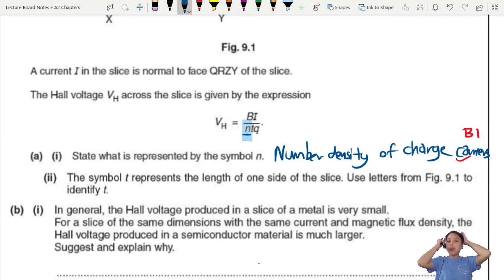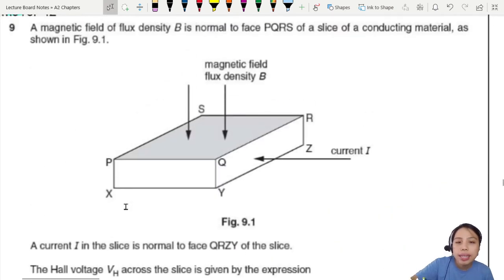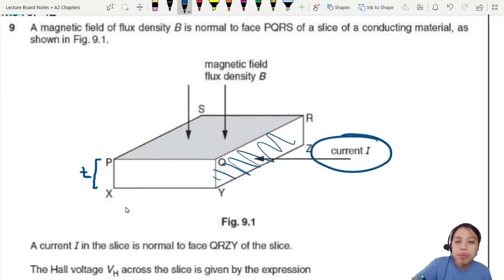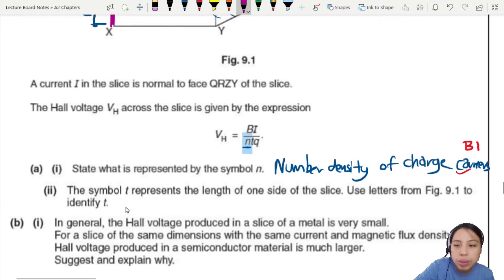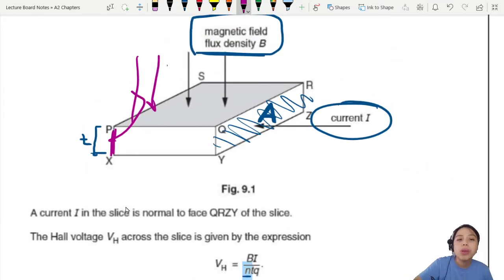The symbol T represents one side of the slice. So let's use the letters from figure 9.1 to identify T. T, usually we say thickness of the slice. And that will usually be the one parallel to the magnetic field. So that will be this thickness right here. How do you know? Because you see current is coming in through this side.